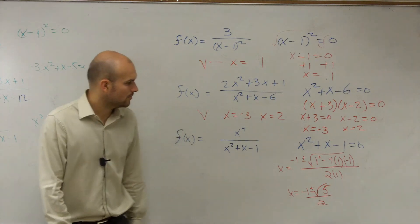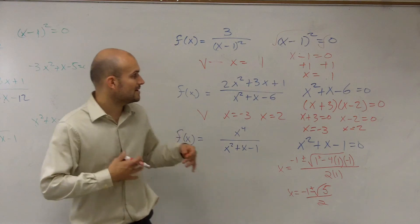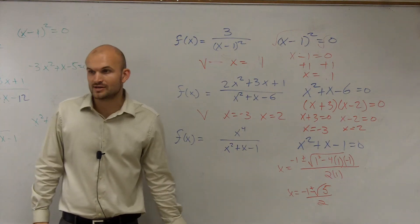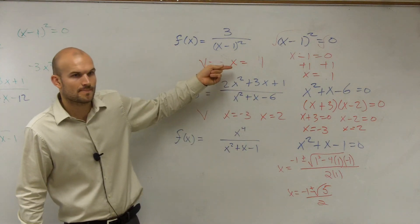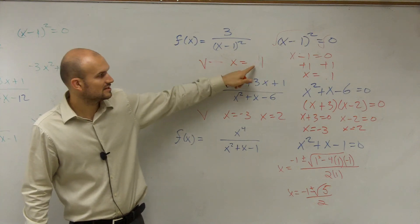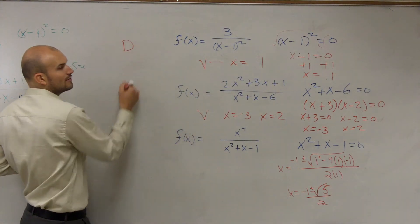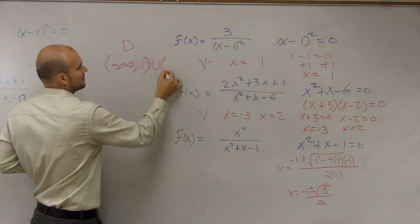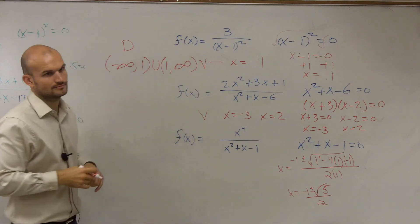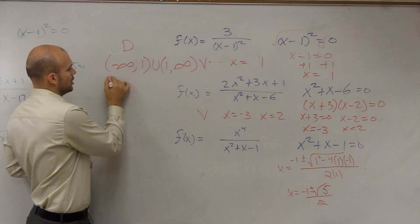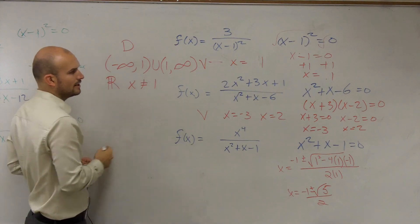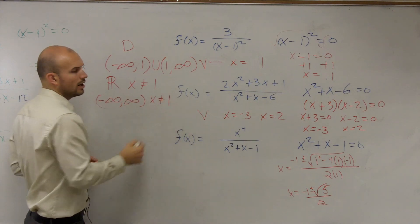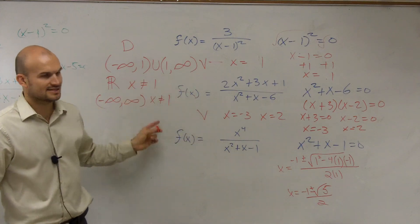So ladies and gentlemen, let's talk a little bit about domain then. Just real quick. Remember, I talked about domain is going to be all real numbers except when our denominator is 0. So when is our denominator equal to 0 for the first one? When x equals 1. So you can say your domain is from negative infinity to 1 union 1 to infinity. You could say all real numbers where x does not equal 1. You could say from negative infinity to infinity where x does not equal 1. You could say all real numbers except x cannot equal 1.